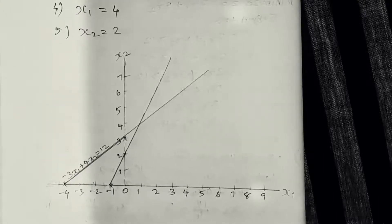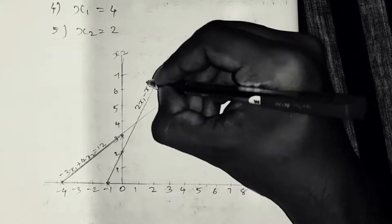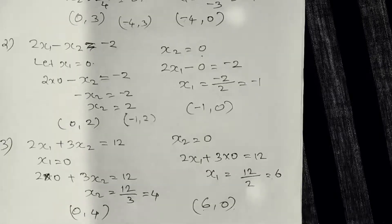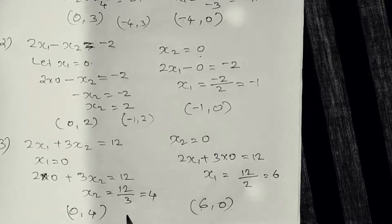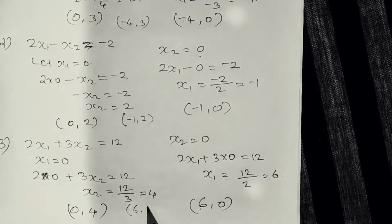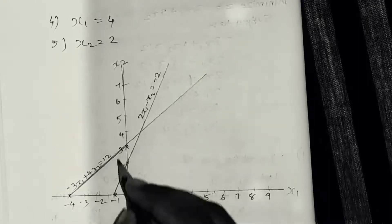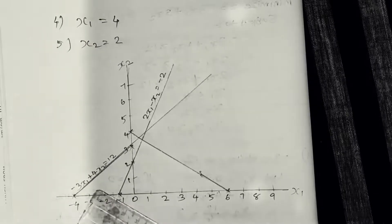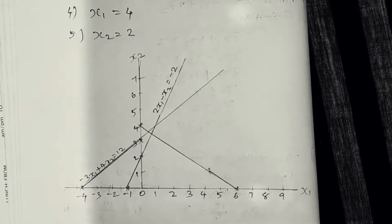Equation two is 2x1 minus x2 equal to minus 2, with points (minus 1, 0) and (0, 2). For equation three, 2x1 plus 3x2 equal to 12, with values (0, 4) and (6, 0). We plot x1 equals 6, x2 equals 4, and x2 equals 4, x1 equals 6, then connect the line.